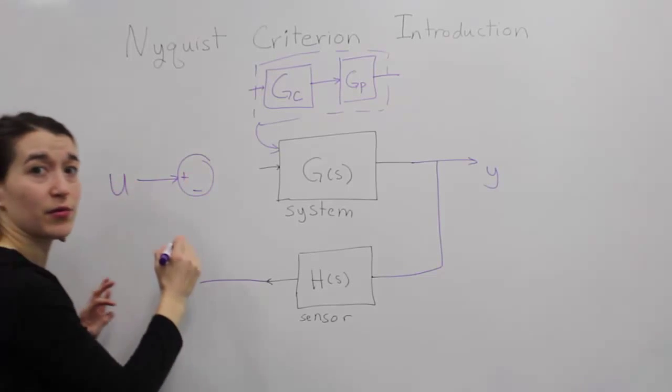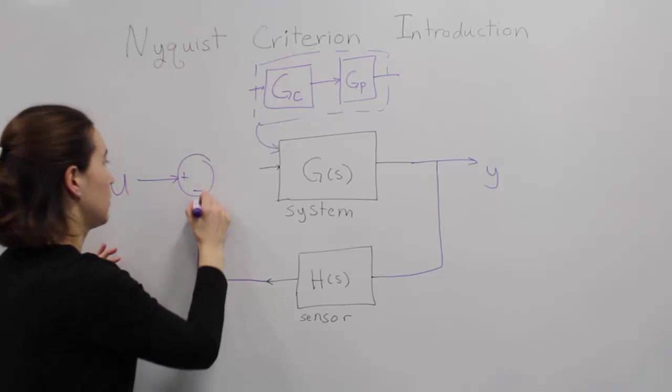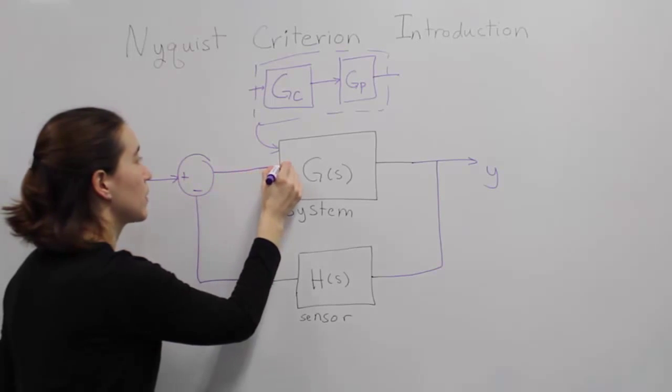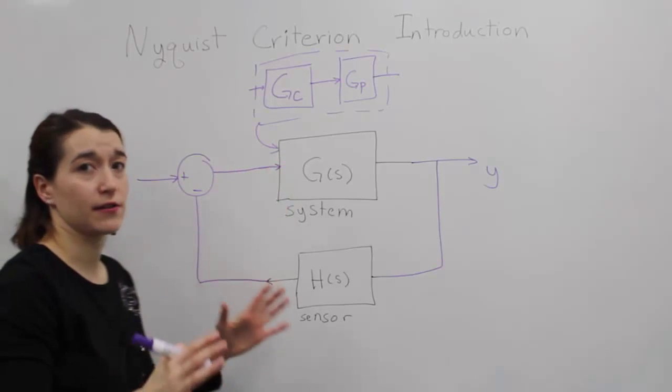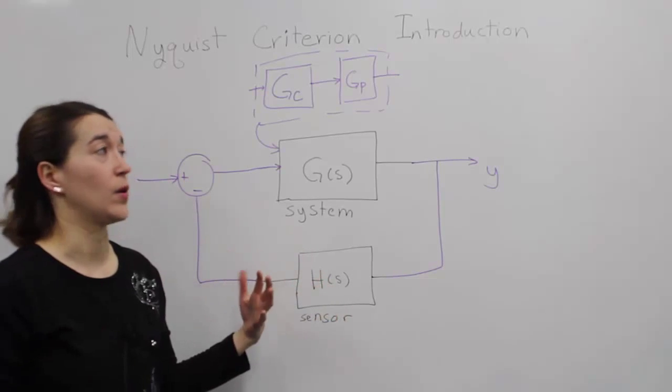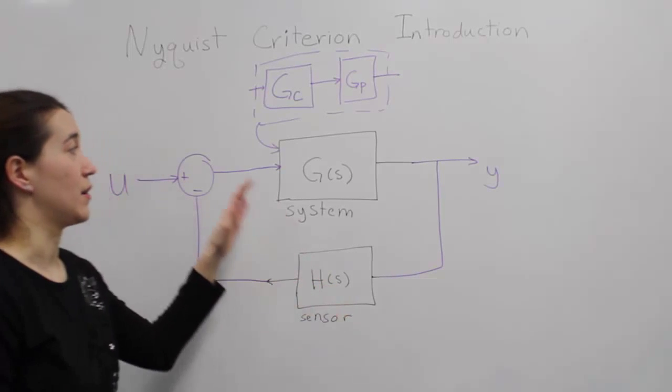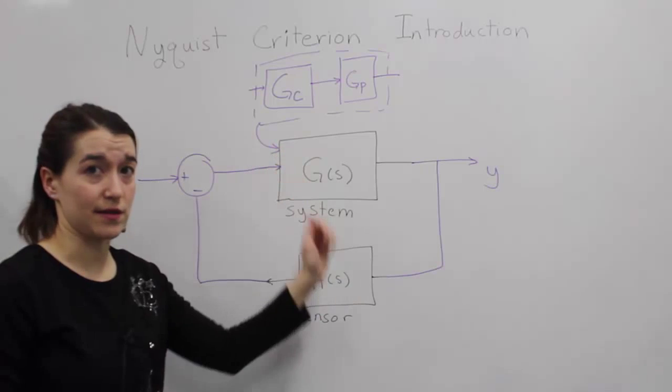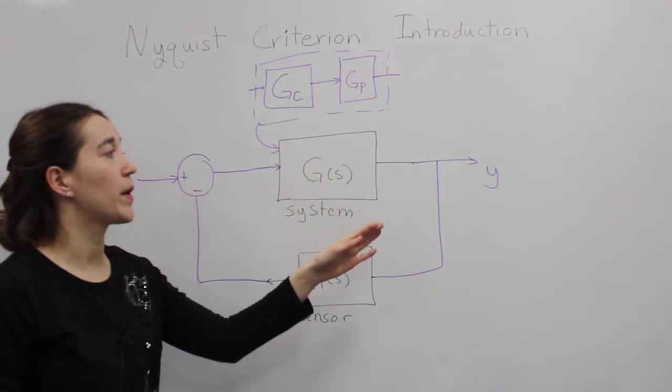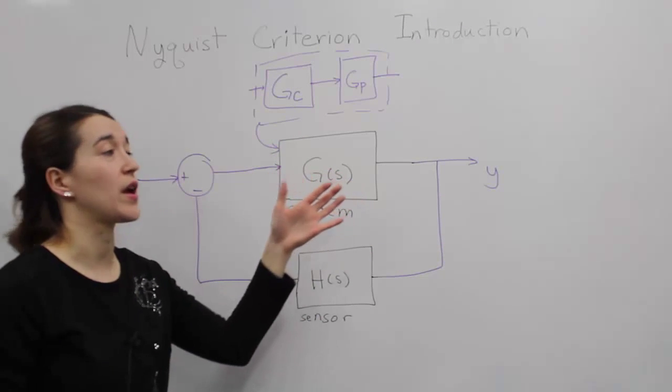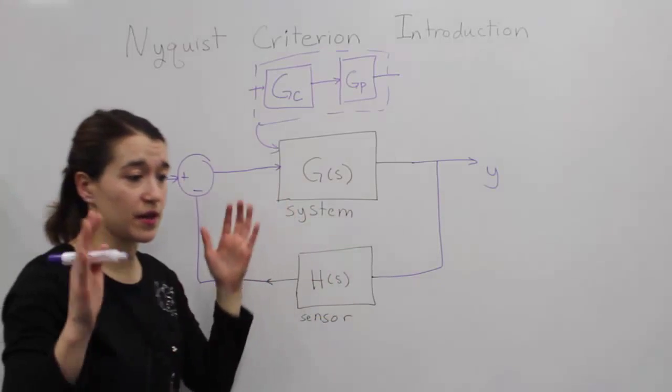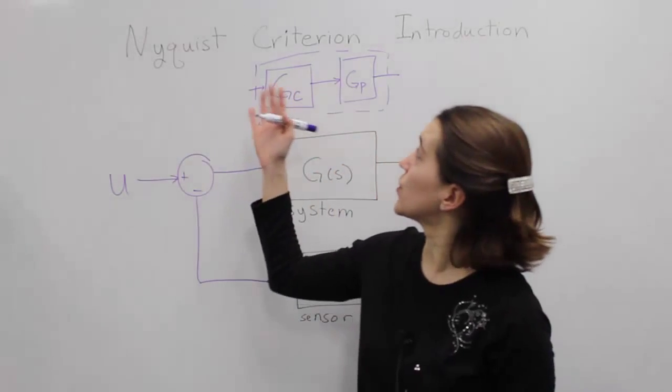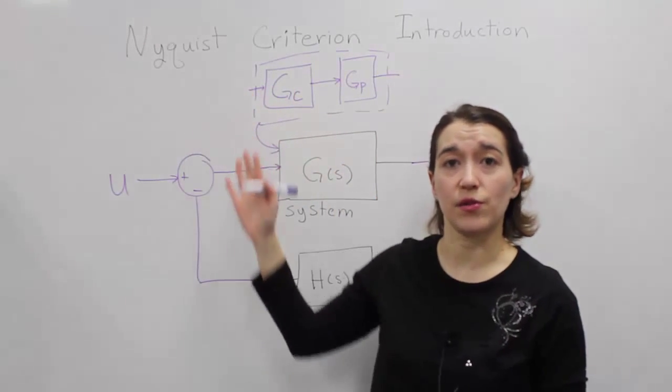So then we have some sort of reference input, put this into closed loop, we can definitively determine if this system will be stable or not, based on the frequency response of this system and the open loop poles and zeros. So we'll be using the Nyquist criterion to determine that closed loop stability.